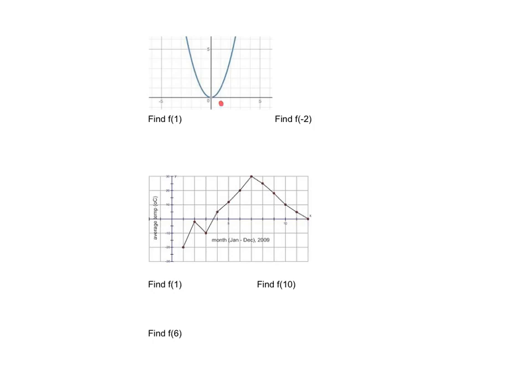Okay, f at 1. Here's 1. Read up. That would be 1. And then f at negative 2. Here's negative 2. Read up until you intersect. There it is at 4.